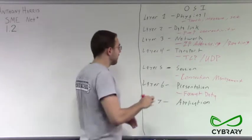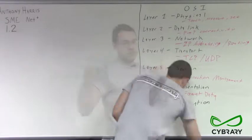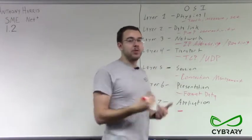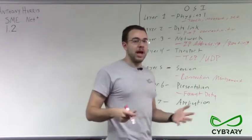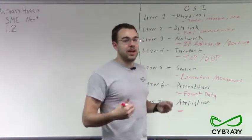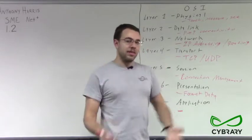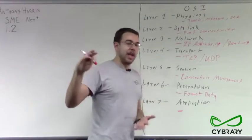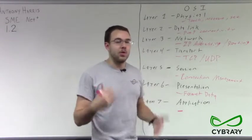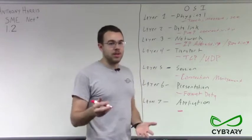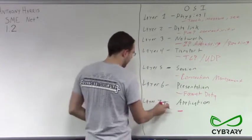And then lastly, our layer seven devices are going to be our different protocols that actually manage how applications are allowed to send and receive over the network. They manage how data is able to create sessions and use resources. So it essentially allows our applications and lets them communicate with our network, such as our internet browsers or sending and receiving our files. So with our layer seven, we have things such as our applications management.